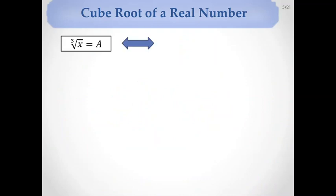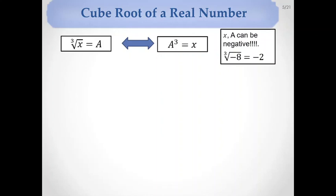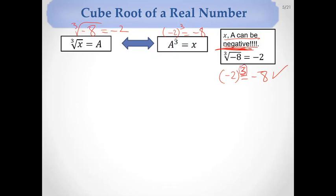Now, the cube root of a real number: the cube root of x equals a if a cubed equals x. Surprisingly, x can be negative here. For example, the cube root of negative 8 is negative 2, because (−2)³ = −8. Negative numbers are allowed because the index 3 is odd — if the index is odd, negative numbers are permitted.